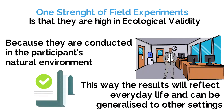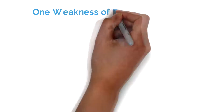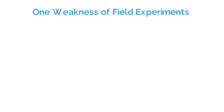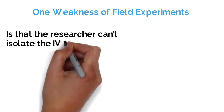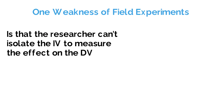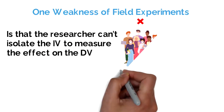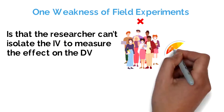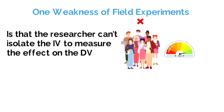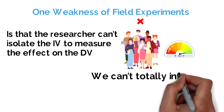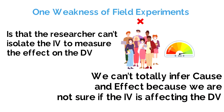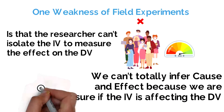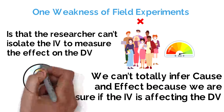One weakness of the field experiment is that the researcher cannot completely isolate the independent variable to measure the effect on the dependent variable. Therefore, we cannot totally infer cause and effect, as we cannot be totally sure that the independent variable is affecting the dependent variable, or whether it is actually some other extraneous variable.